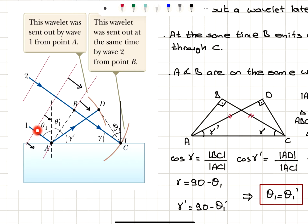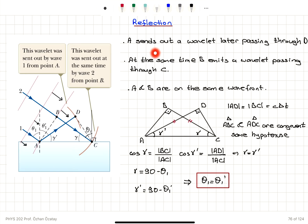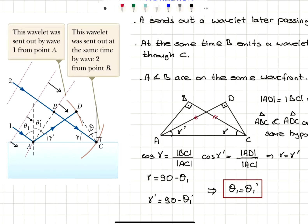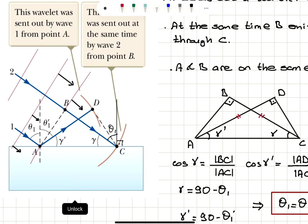Ray 1 hits the medium at point A, and ray 2 hits the surface at point C. Points A and B are on the same wavefront, so this is a plane wave approaching the surface. Point A sends out a wavelet that later passes through point D.